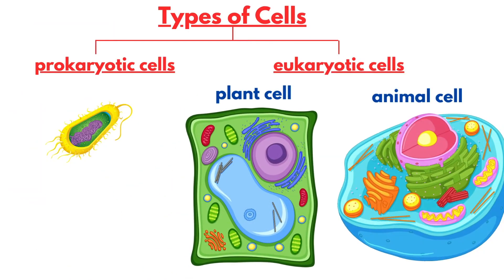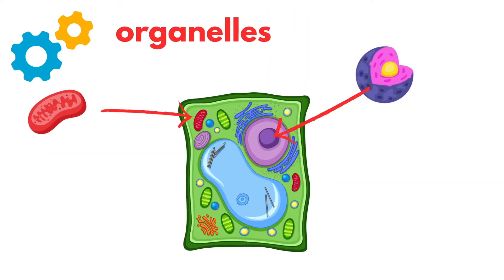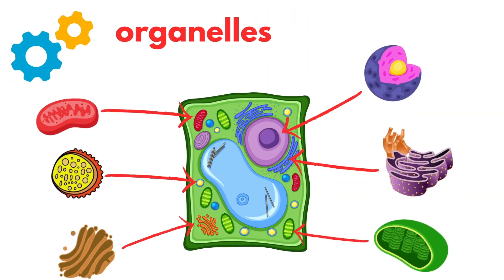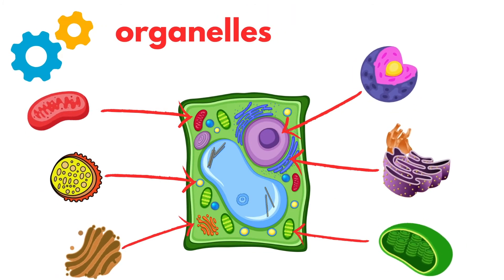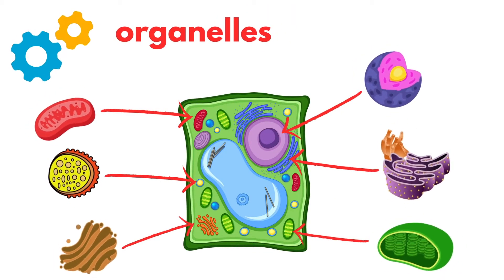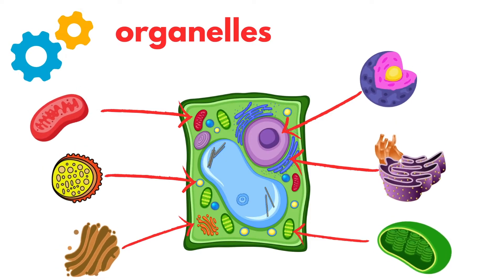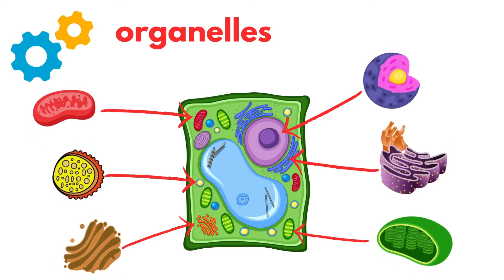Both plant and animal cells are eukaryotic, meaning they have a nucleus and various membrane-bound organelles. Think of these organelles as specialized departments within a tiny factory, each performing crucial tasks to keep the cell running smoothly.